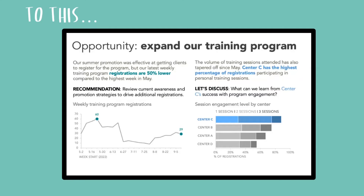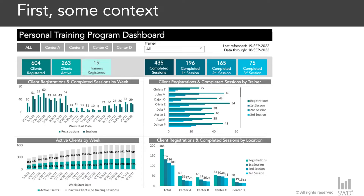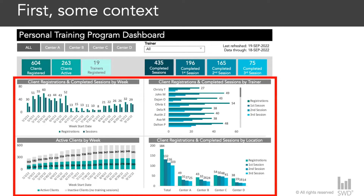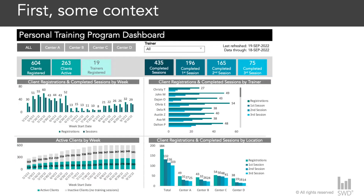We'll create a succinct and action-oriented data story. First, some background: here we have a dashboard for a fitness chain, used to monitor performance of a new personal training program where members could sign up and attend up to three one-on-one sessions with a personal trainer. At the top there are filters to focus on a particular center location or trainer, and below that are colorful prominent boxes measuring high-level KPIs. Underneath are four bar charts showing aggregated and time-trended information.